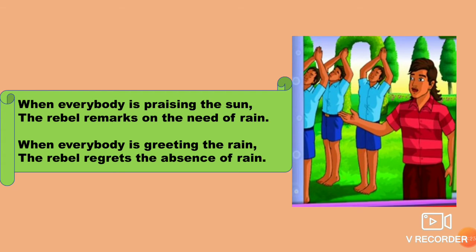He doesn't agree with the others who are praising the sun. So when everybody is greeting the rain and enjoying the happiness of rain and praising it, the rebel regrets the absence of sun. He says the absence of sun is very dull, and he wants the sun to come back.